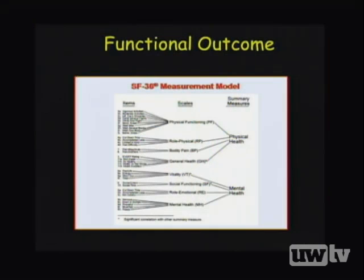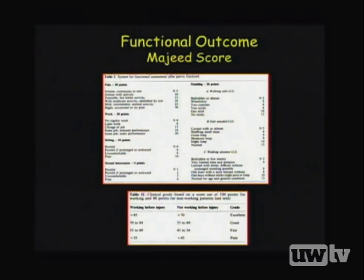The SF-36 is divided into eight scales: physical functioning, physical role, bodily pain, general health, vitality, social functioning, emotional functioning, and mental health. It contains 36 questions, each equally weighted, and is scored from 0 to 100 matched to population controls.